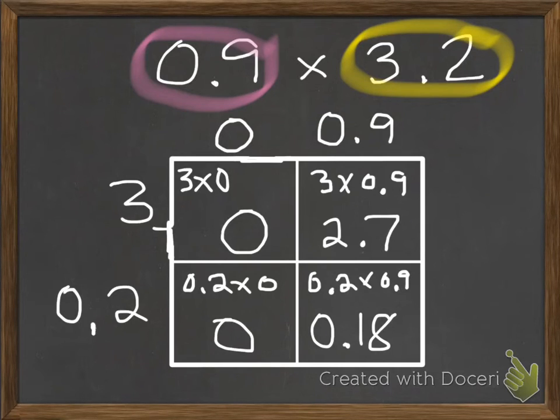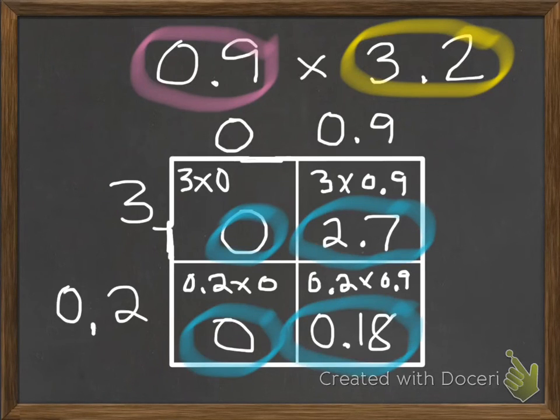We officially have our four partial products: 0, 2.7, 0, and 0.18. To find our final answer for our original problem, 9 tenths times 3 and 2 tenths, all we have to do is add up these products.